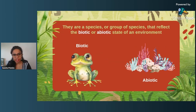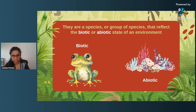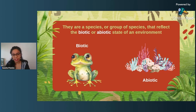Indicator species are species or groups of species that reflect the biotic or abiotic state of an environment. Biotic is basically living and abiotic is non-living. For example, frogs — their skin is very sensitive to chemicals and toxins. Being inhabitants of aquatic systems, if a water body is full of toxins or not very habitable, there is a chance you will not find many species of frogs living in that particular region.